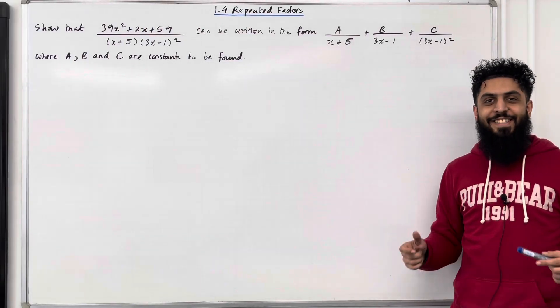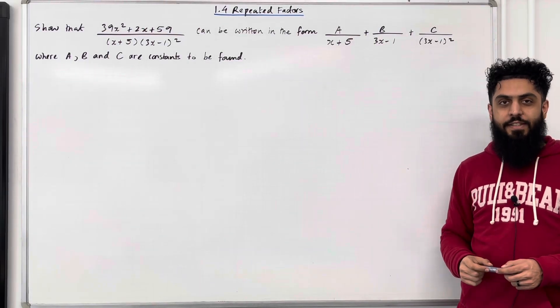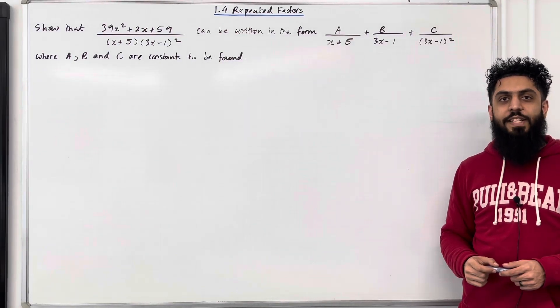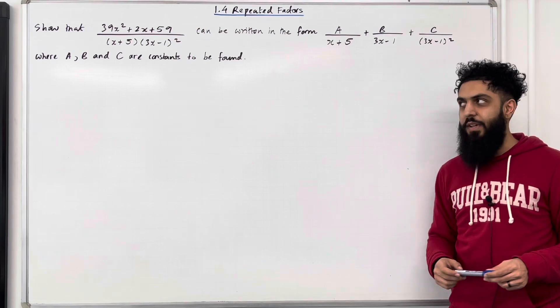Welcome back. In this teaching video I'm looking at 1.4 repeated factors. 1.4 represents chapter 1, section 4 of the Pearson A-level Pure Mathematics Year 2 textbook.